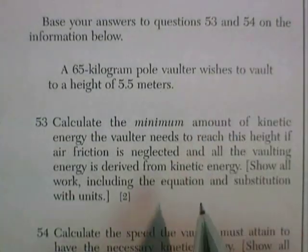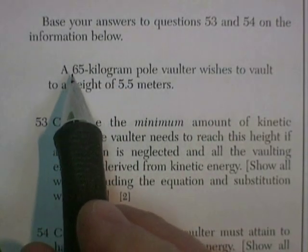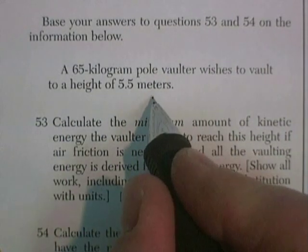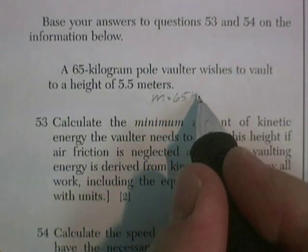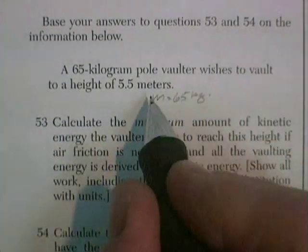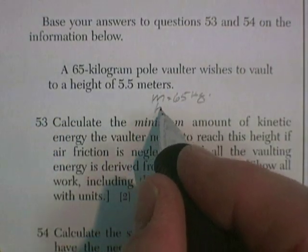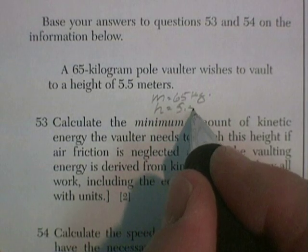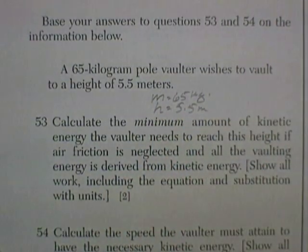Questions 53 and 54 are based on this information. 65 kilogram pole vaulter, so the mass is 65 kilograms, wishes to vault to a height of 5.5 meters. So we're going to go to a height of 5.5 meters, which is a pretty good height for a pole vaulter.